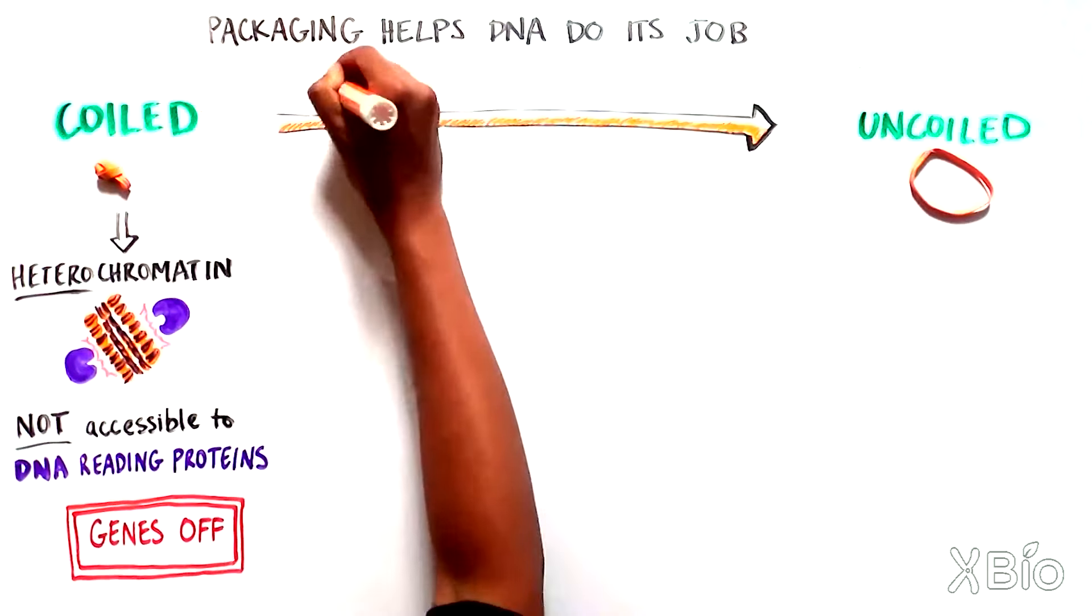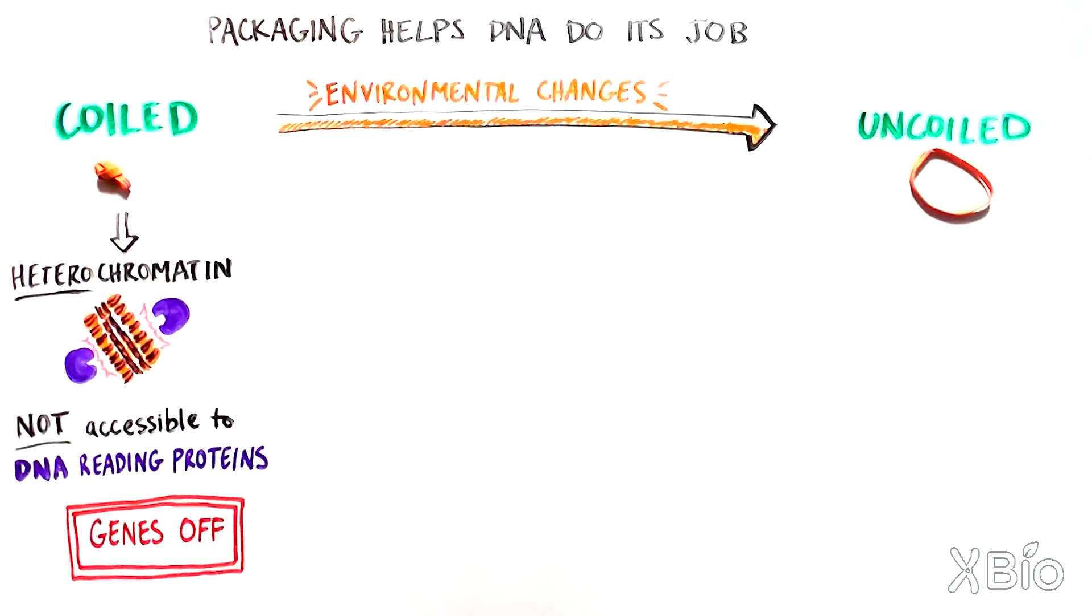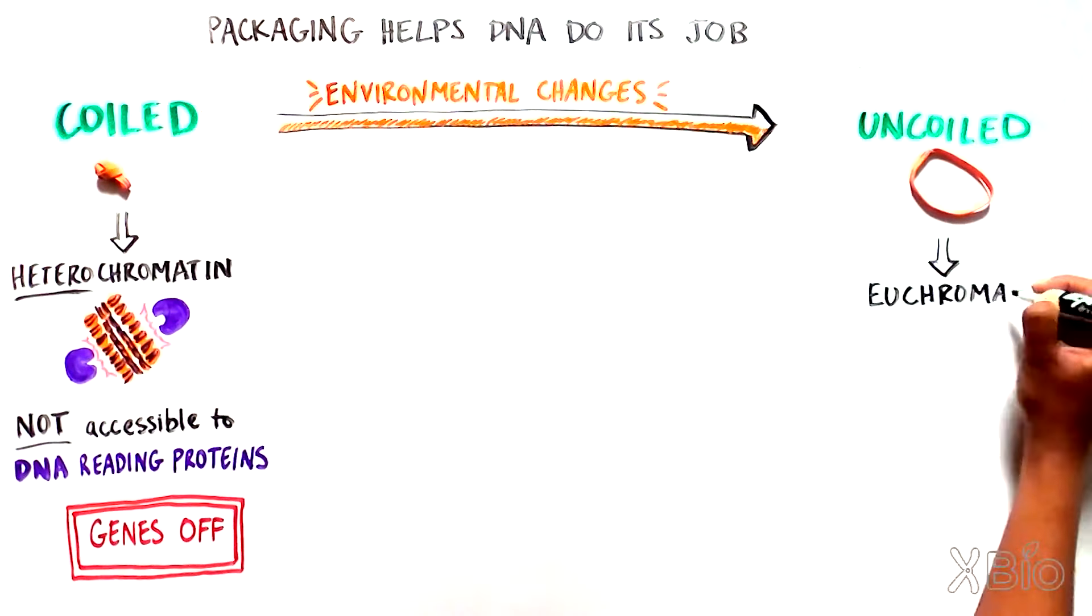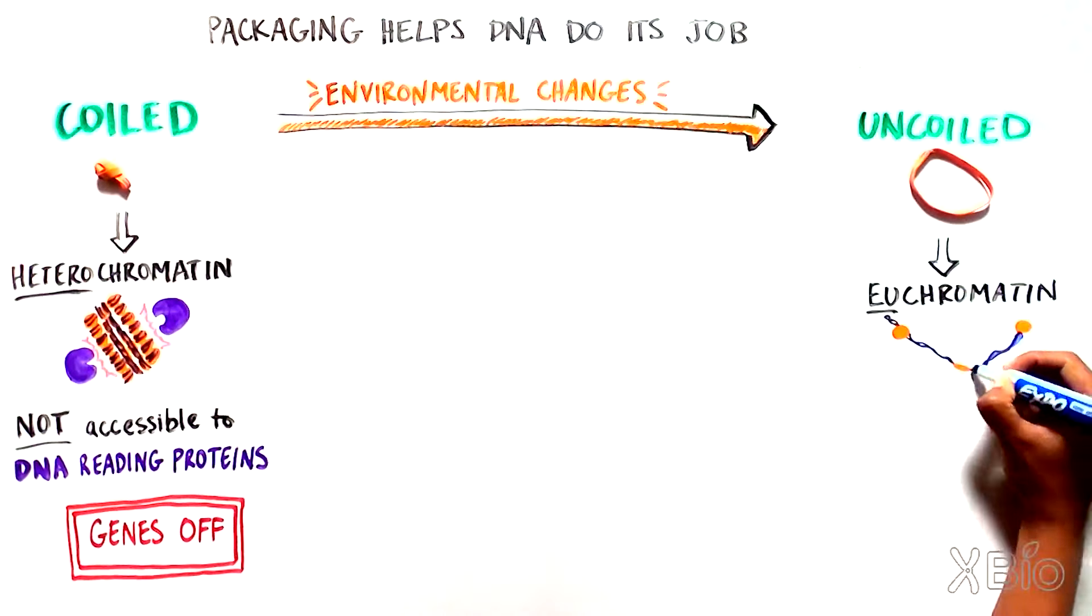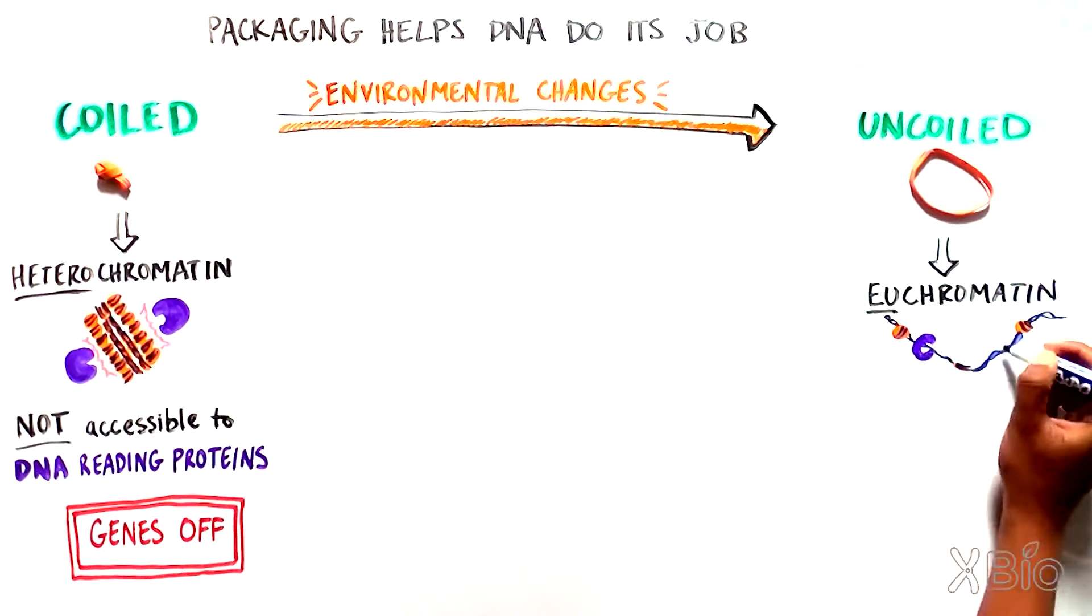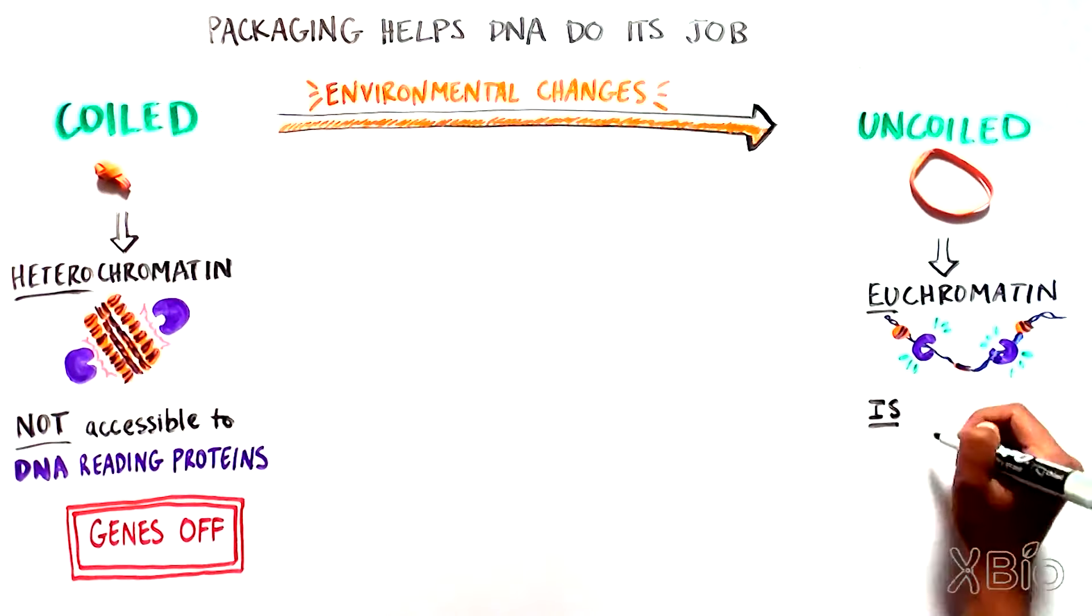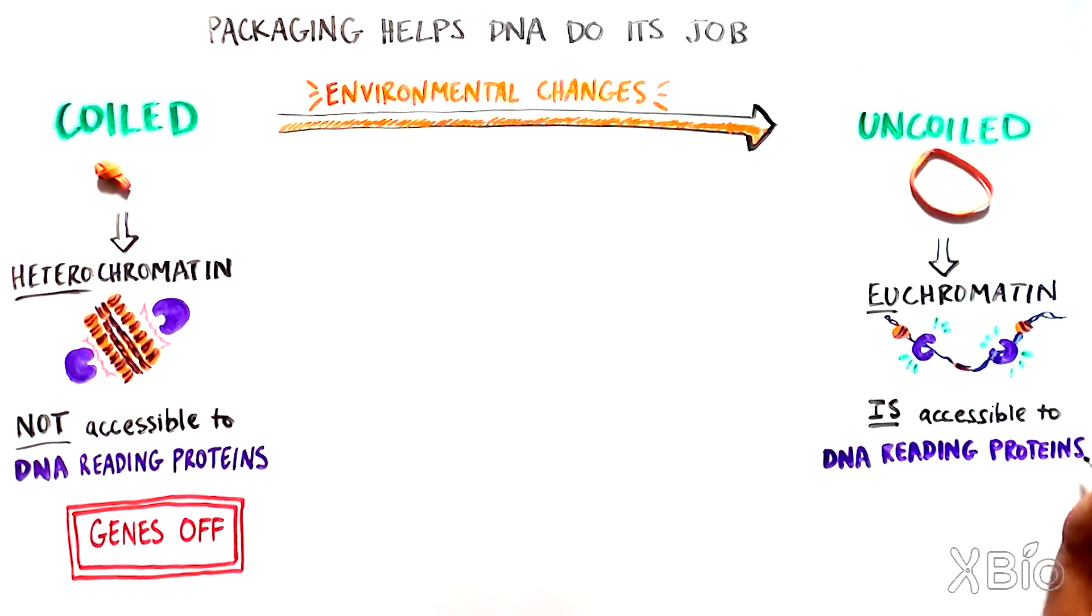In response to environmental changes, however, histones are altered through a variety of molecular processes, which triggers the DNA to uncoil into a more relaxed state, known as euchromatin. Euchromatin is accessible to DNA-reading proteins, thus turning the necessary gene on.